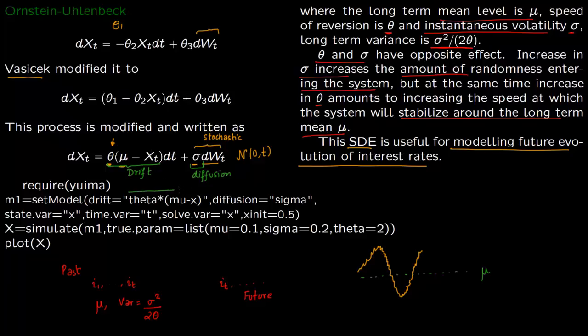We just copied this right here. And diffusion is just sigma. State variable is x. Time variable is t. We are going to solve for variable x. I'm setting the initial value as 0.5. You can set whatever value you want to.